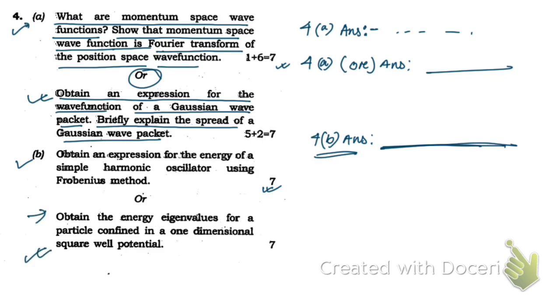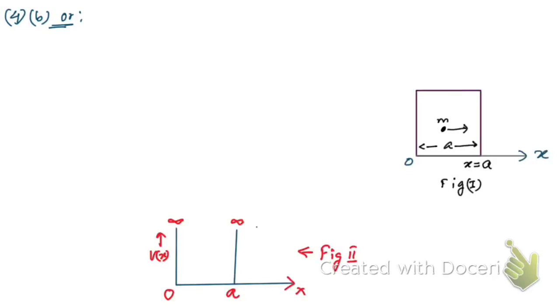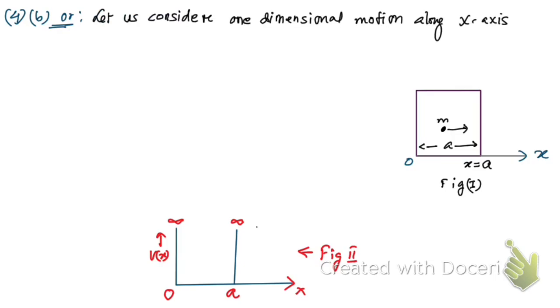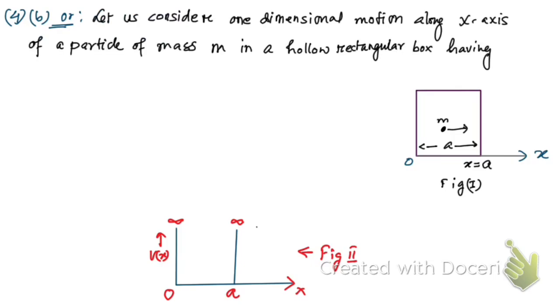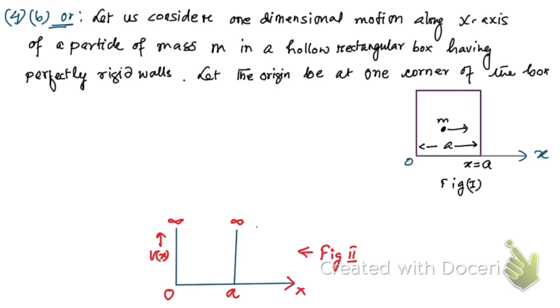Now we're going to solve the last part: 4b 'or' — obtain the energy eigenvalues for a particle confined in a one-dimensional square well potential. We consider a particle inside a box of mass m. Let us consider the one-dimensional motion along the x-axis of a particle of mass m in a hollow rectangular box having perfectly rigid walls, as shown in figure one.